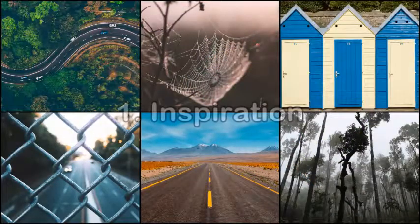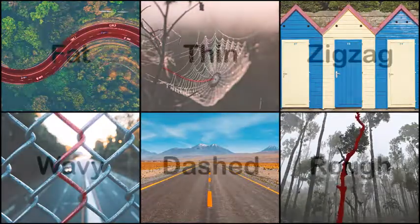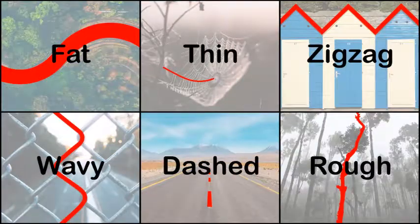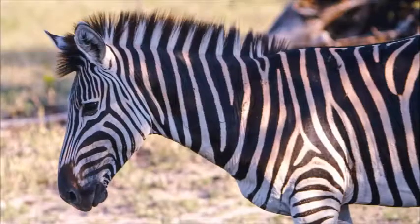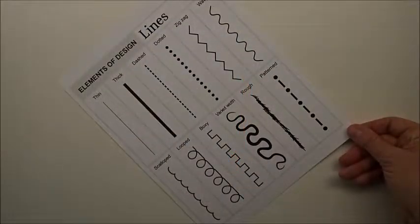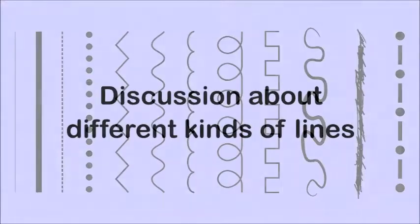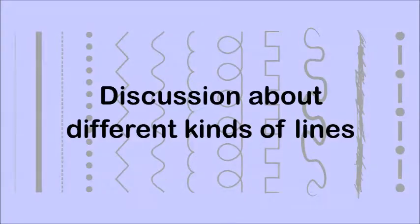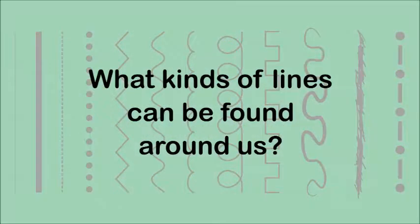Start by gathering inspiration. In this exercise I've provided pictures of different kinds of lines, including a picture of a zebra with smooth stripes. I have also provided a reference sheet with different kinds of lines. Perhaps students could engage in a discussion about different kinds of lines in their environment.